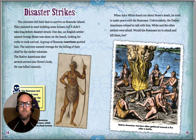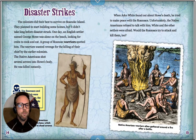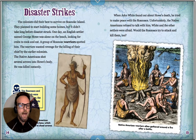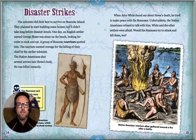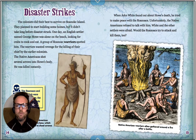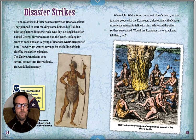The colonists did their best to survive on Roanoke Island. They planned to start building some homes, but it didn't take long before disaster struck. One day, an English settler named George Howe was alone on the beach looking for crabs to cook and eat. A group of Roanoke warriors spotted him. The warriors wanted revenge for the killing of their chief by the earlier colonists. The Native Americans shot several arrows into Howe's body and he was killed instantly. When John White found out about Howe's death, he tried to make peace with the Roanokes. Unfortunately, the Native Americans refused to talk with him. White and the other settlers were afraid — would the Roanokes try to attack and kill them too?